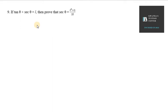In this case we have tan theta plus sec theta. We need to recall the identity: 1 plus tan squared theta equals sec squared theta, and we have to use this equation.